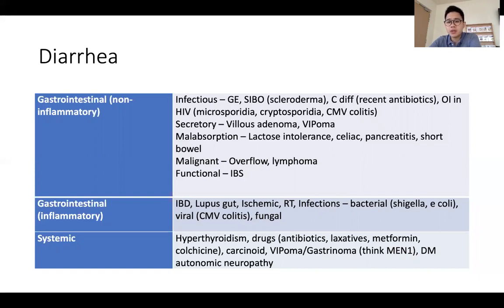For the inflammatory causes, there are a few big groups to consider. IBD is a big group. Along with the inflammatory group would be lupus gut, ischemic colitis, previous radiation, and infection — bacterial infections such as Shigella, E. coli, and sometimes viral and fungal causes can also cause an inflammatory picture presenting with bloody mucoid diarrhea.